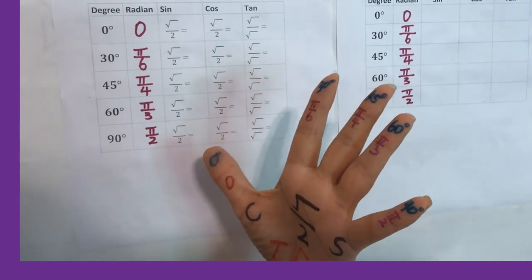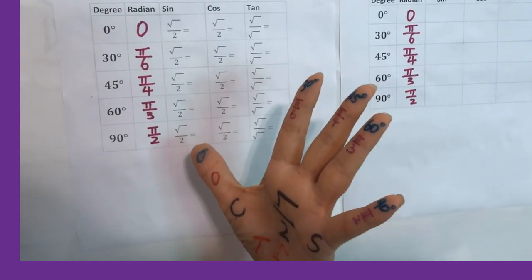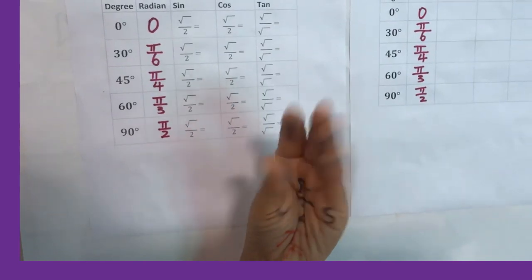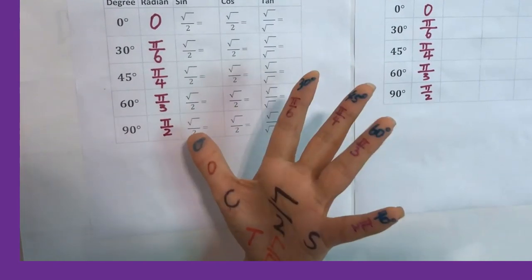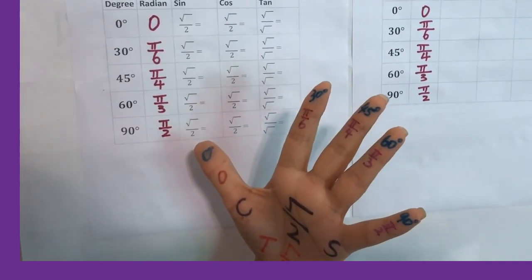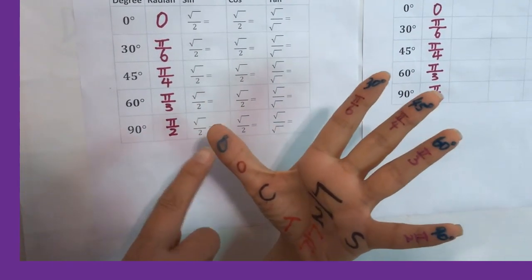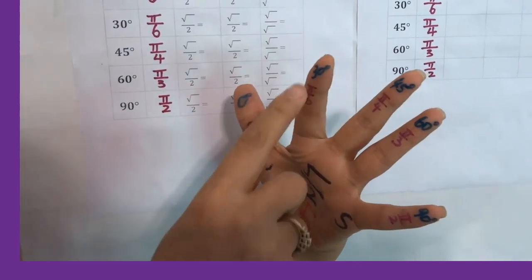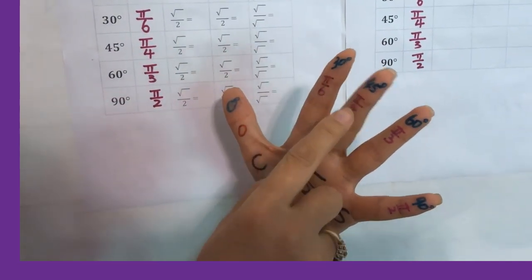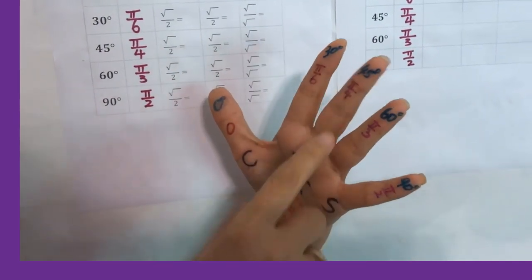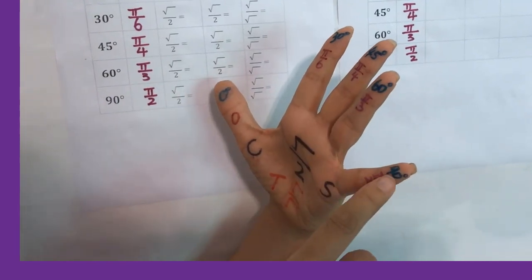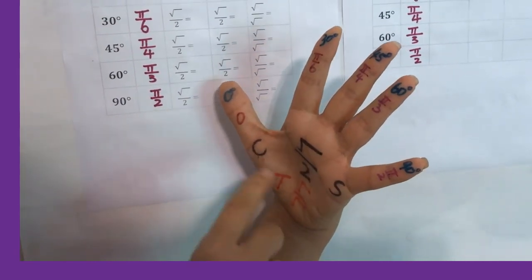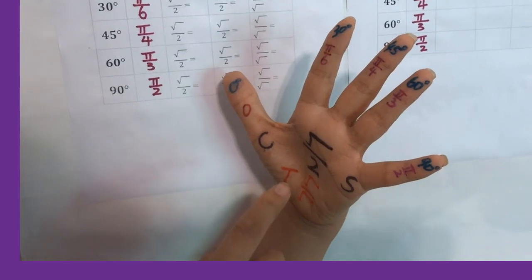Remember that we use the different fingers to show the degree. The thumb is 0 degrees, then 30 degrees, 45 degrees, 60 degrees, and 90 degrees. If we want to use radians,